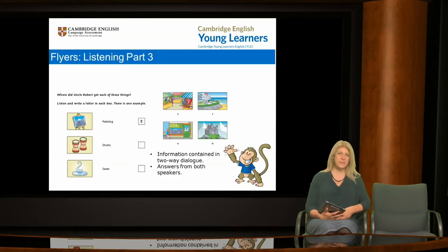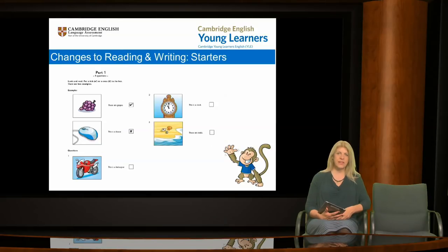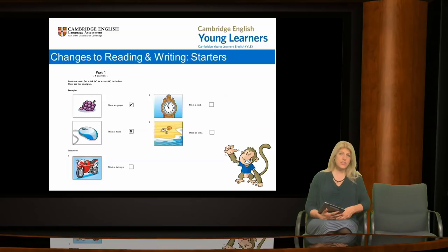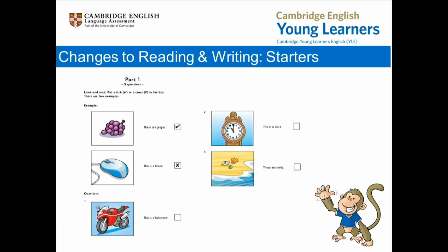So that's it for listening. We now move on to the reading and writing component. The starters question paper has not changed to any great extent. We have made some very small changes to just two parts — parts one and four. First, let's look at part one. If you're already familiar with this, you will notice that starters reading and writing part one remains broadly unchanged. There are still five questions.